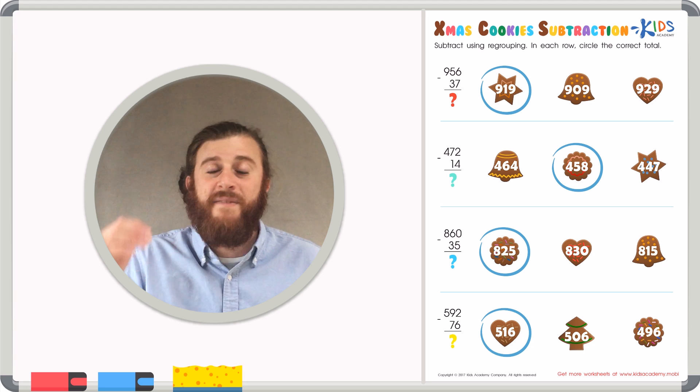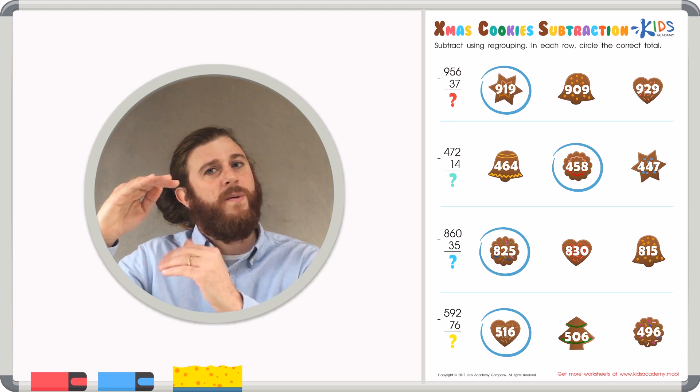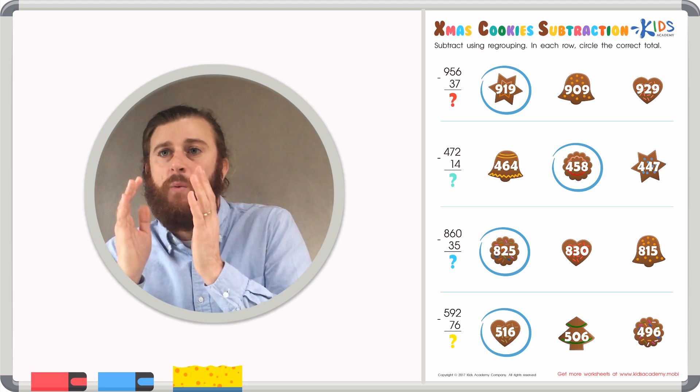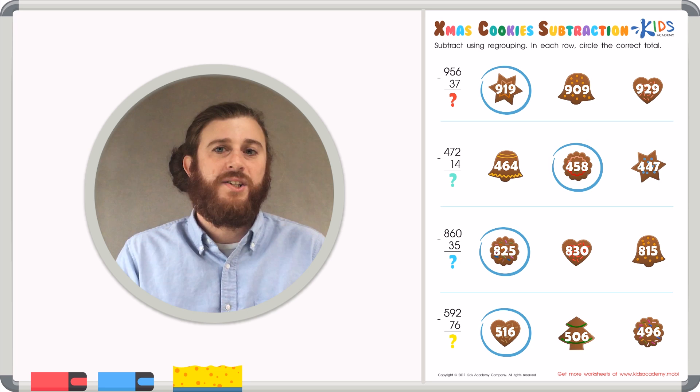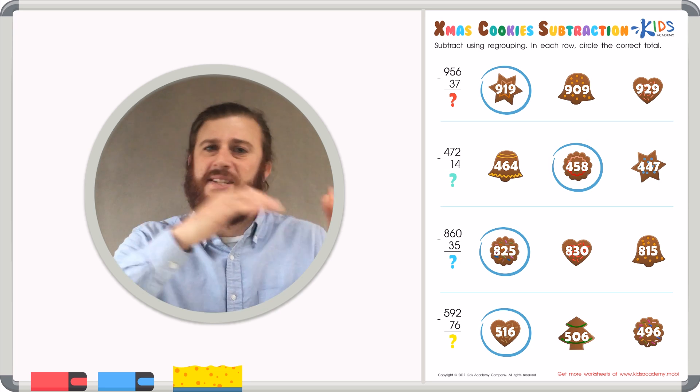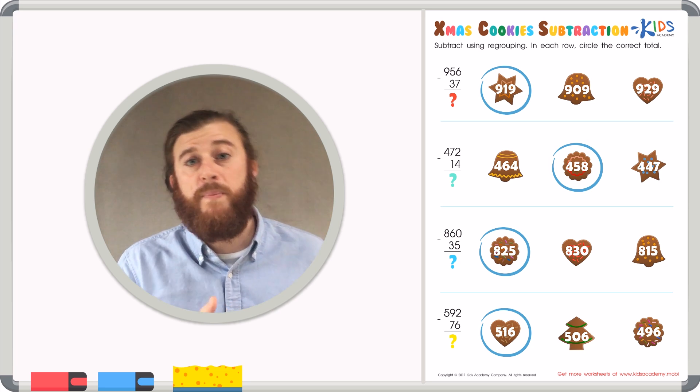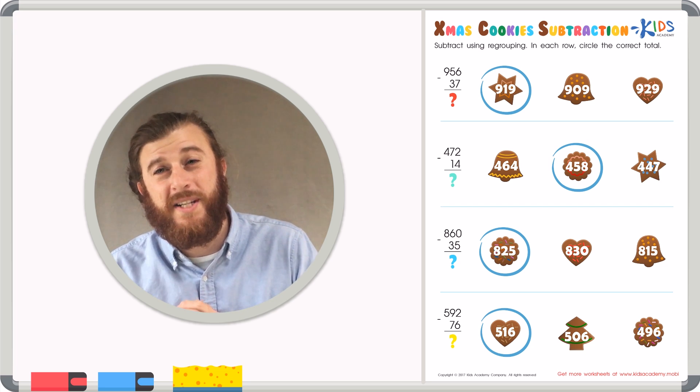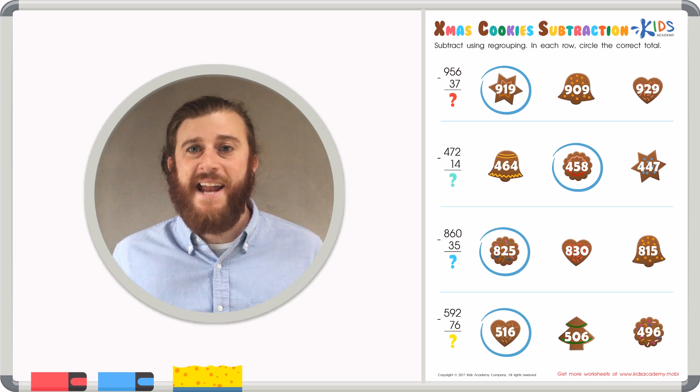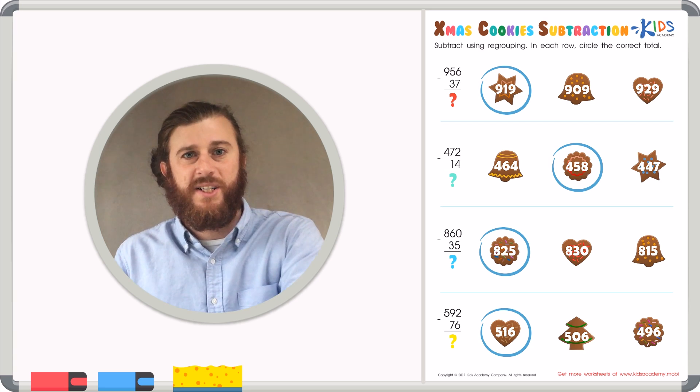Remember, boys and girls, if the top number is smaller than the bottom number, even if it's in the ones place, the tens place, you have to borrow from the place next door. You're borrowing the value of that digit. So if you borrow 1 from the tens place, you're really borrowing 10. So you can add 10 to the previous place.